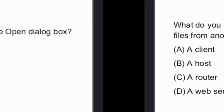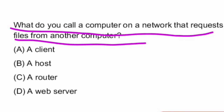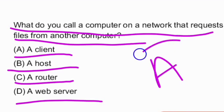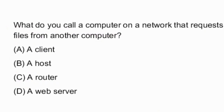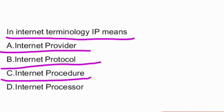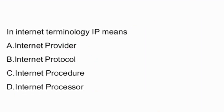Next question: what do you call a computer on a network that requests files from another computer? The options given are: client, host, router, web server. Option A — client — is the right answer. Next question: in internet terminology, IP means what? The options given are: internet provider, internet protocol, internet procedure, internet processor. And the answer is option B — internet protocol.